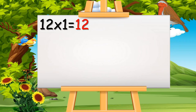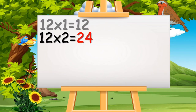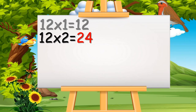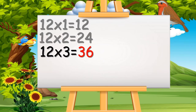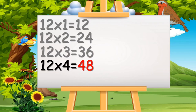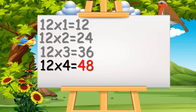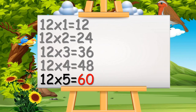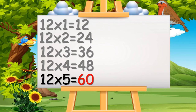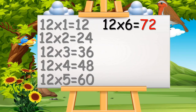12 ones are 12. 12 ones are 12. 12 twos are 24. 12 twos are 24. 12 threes are 36. 12 threes are 36. 12 fours are 48. 12 fours are 48. 12 fives are 60. 12 fives are 60. 12 sixes are 72.